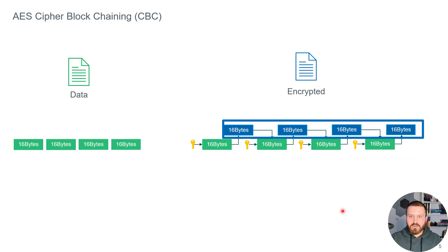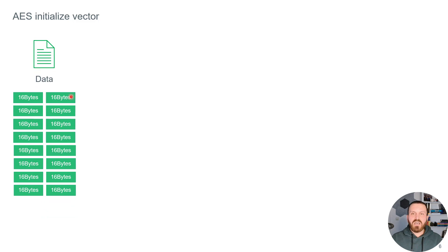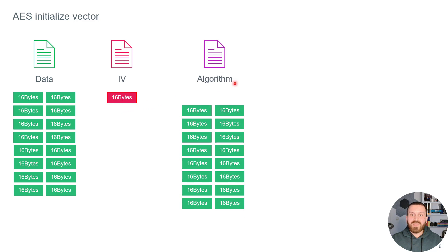And that is the result. Let's look at the AES Initialization Vector or IV. We have data consisting of many blocks, each block is 16 bytes. We generate an IV which must have the same size as the block we are using for chaining — 16 bytes. The data is green and the IV is red. The algorithm needs not only the data but also this IV, because the first block should be encrypted using the key and this IV block.